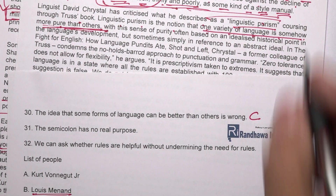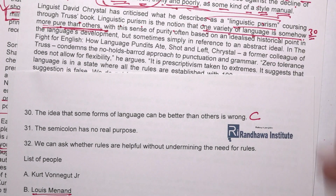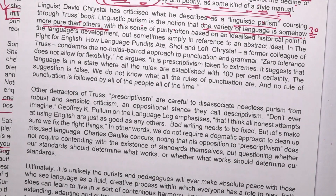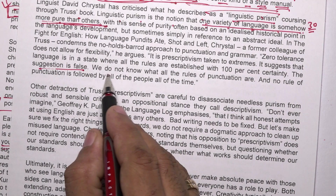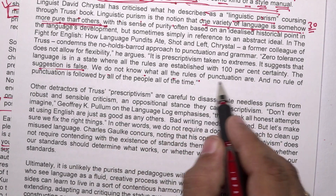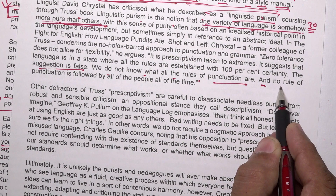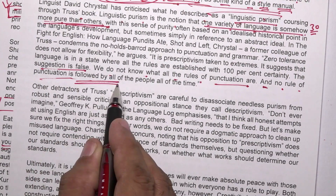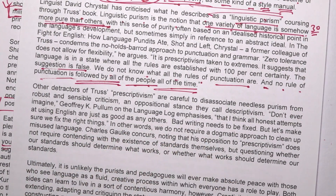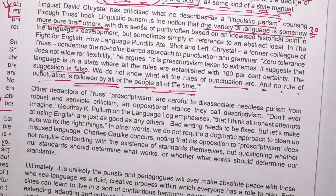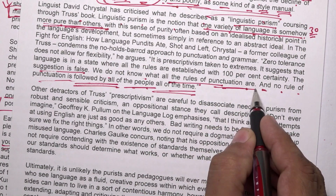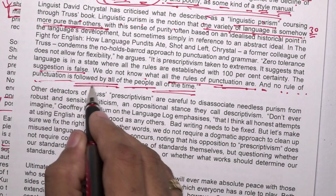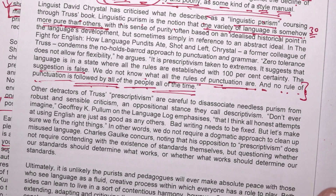Same paragraph, last line: 'This suggestion is false — we don't know what all the rules of punctuation are, and no rule of punctuation is followed by all of the people all of the time.' This is also option C.